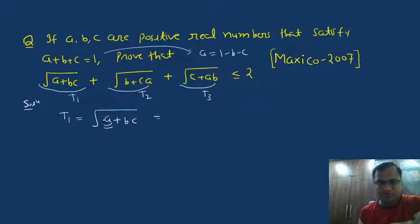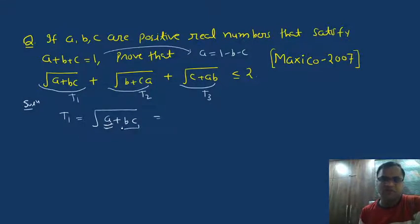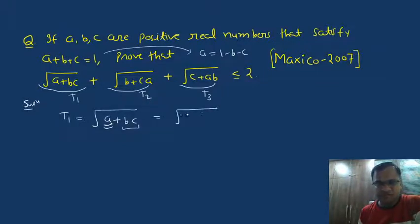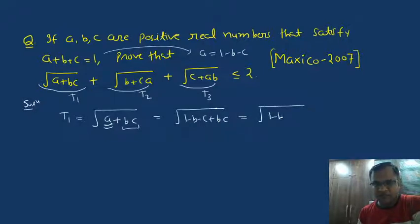Because the expression is heterogeneous — this term is of degree 1 and this term is of degree 2. So I am going to put the value of a from the given condition. Therefore, this term becomes 1 minus b minus c plus bc. Now I can factorize the expression within the radical sign. The factors are clearly (1 minus b) and (1 minus c).